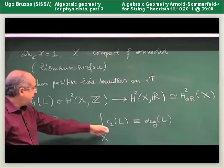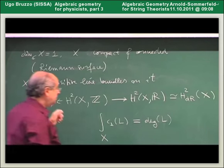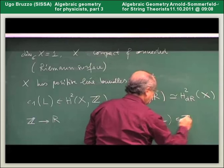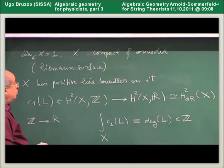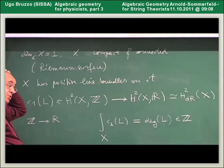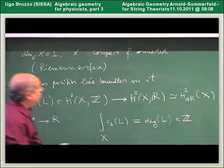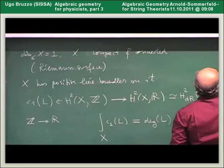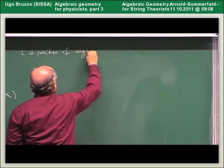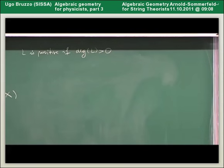Since after all the cohomology class we are integrating is an integer class, the degree is actually an integer number. So to every line bundle on a Riemann surface, we can associate an integer which is its degree. One can prove that L is positive if its degree is positive. L will not define an embedding in general, but one of its powers will. In this way we know that all Riemann surfaces are algebraic.